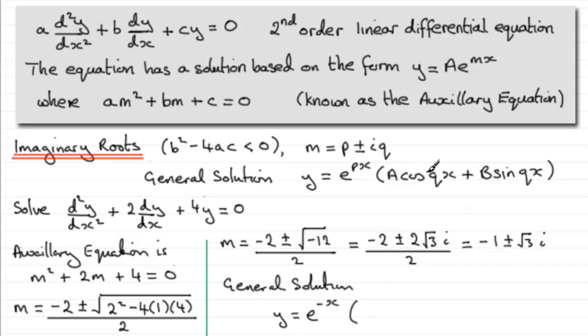All multiplied by a cos qx plus b sine qx, q being the imaginary part. And that's going to be, for this example, root 3. So we've got a cos root 3, and then x, and then plus b sine root 3, multiplied by x.